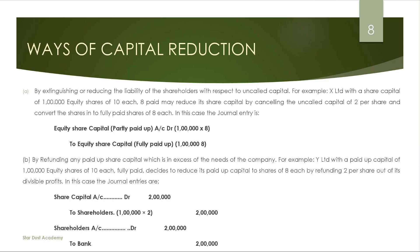The second way is by refunding any paid-up share capital which is in excess of the needs of the company. For example: a company with a paid-up capital of 1 lakh equity shares of Rs. 10 each, fully paid, decides to reduce the paid-up capital to Rs. 8 per share by refunding Rs. 2 per share. The journal entry would credit equity share capital to shareholders for the Rs. 2 refund amount, and then record the payment to bank.